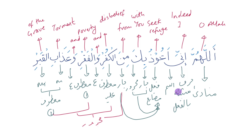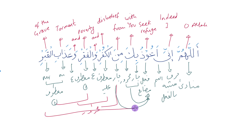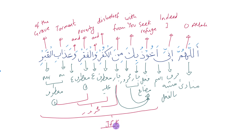The ma'toofs connected to the ma'toof alayhi become the ultimate majroor, and the jar and majroor put together become mut'allik to the a'udhu. All of this is going to be a jumla fi'liya khabariya. And then if you look at inni, that becomes a jumla ismiya khabariya — the ism plus the khabar together becomes the maqsood bin nida'. So this is the whole sentence, and it's a jumla inshaiya with Allahumma, because you're asking Allah for something: it's a du'a.